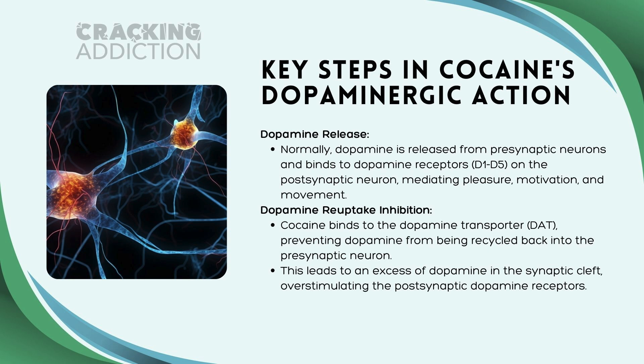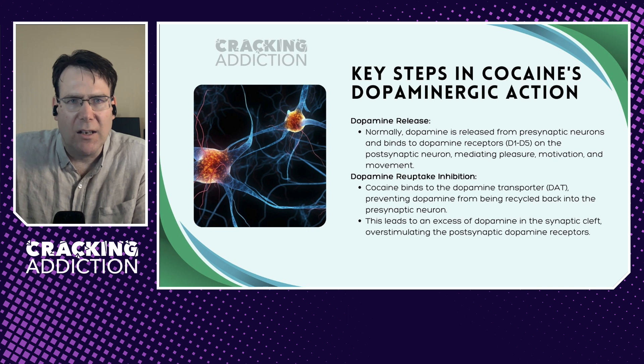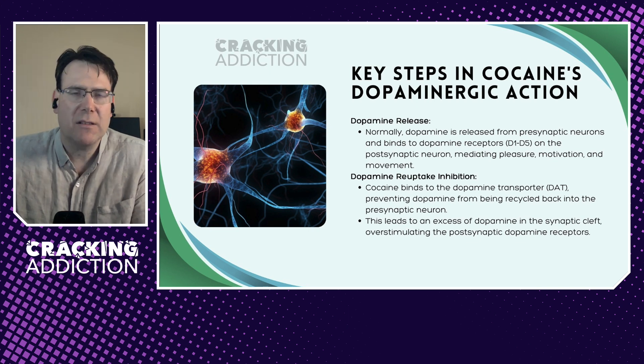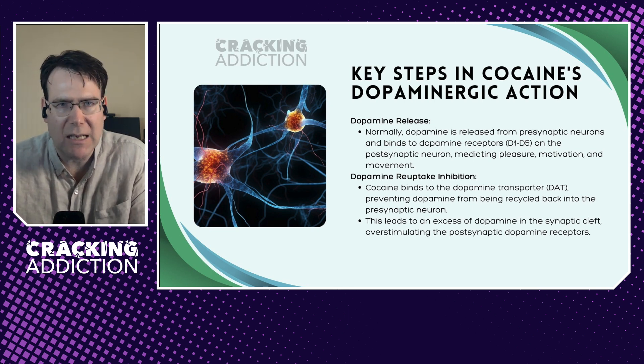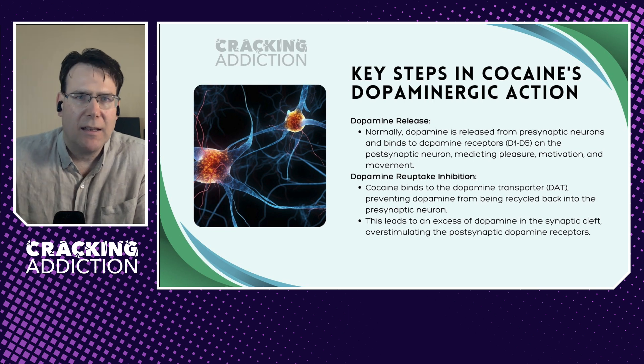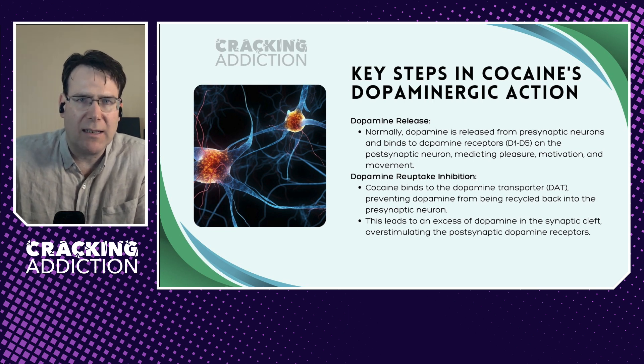Let's look at the key steps in cocaine's dopaminergic actions. Normally, dopamine is released from presynaptic neurons and binds to dopamine receptors — numbered one through to five — on the postsynaptic neuron, mediating pleasure, motivation, and movement. Dopaminergic reuptake inhibition blocks the hoover and increases dopamine concentrations in the synaptic cleft, leading to overstimulation of the postsynaptic dopamine receptor.